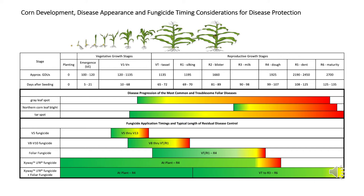I want to look at how that overlays with what we currently do. A lot of growers will use a V fungicide — something they can tank mix with a herbicide. If you make that application at V5, typically it will start to run out around V13, just before you get to tassel. Growers that have high clearance sprayers may make a V8 to V10 fungicide application, and this typically takes you into the early reproductive stages and may last through R1.